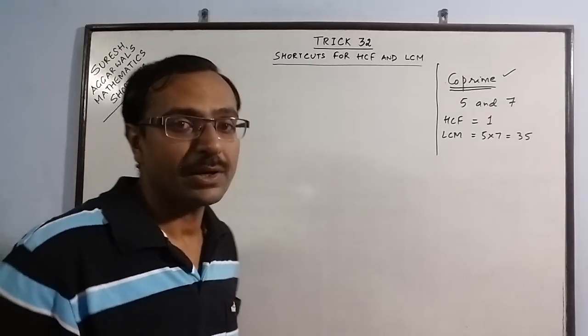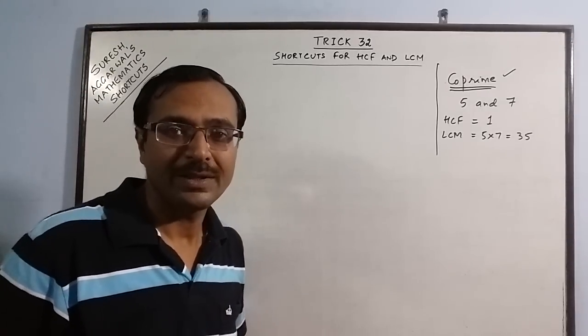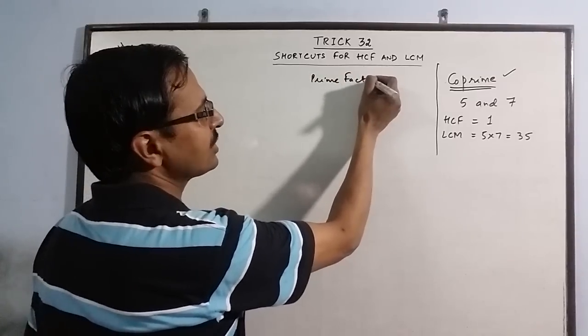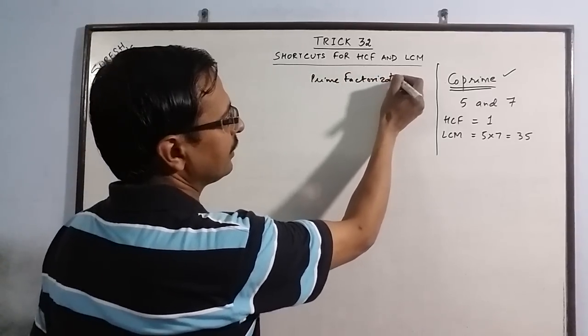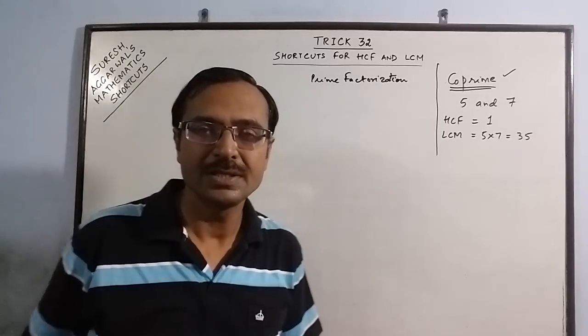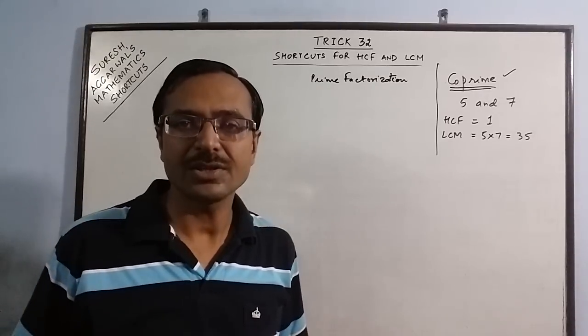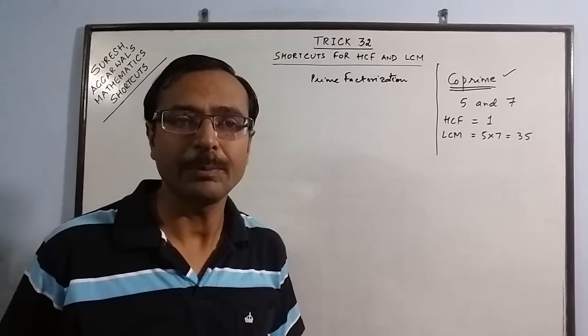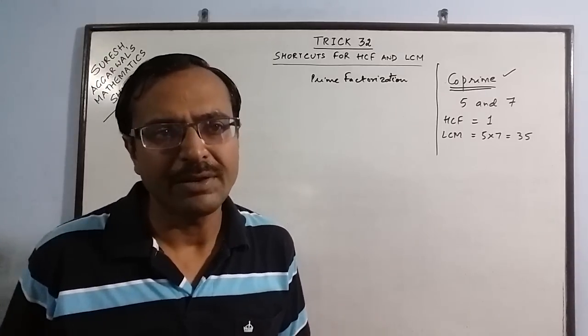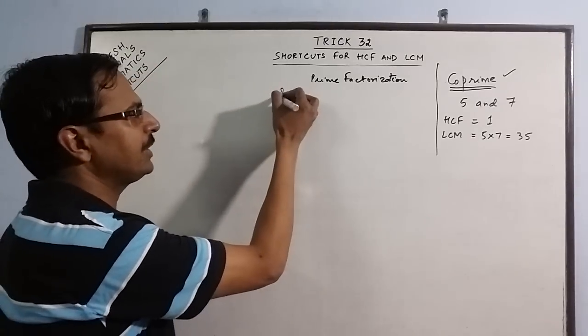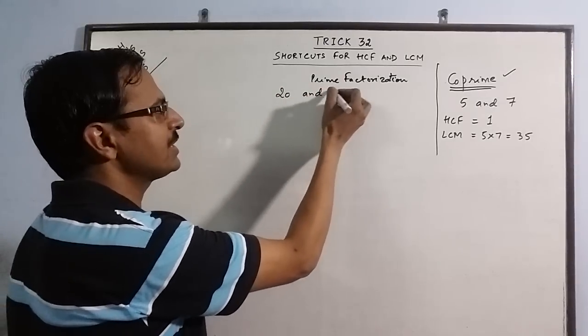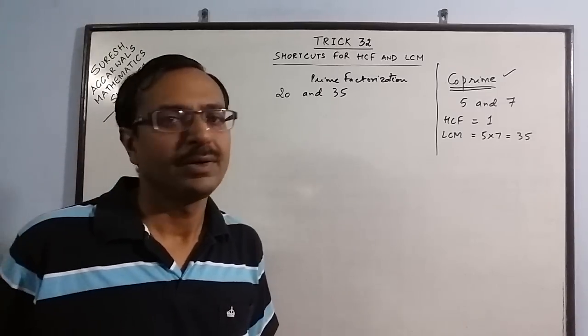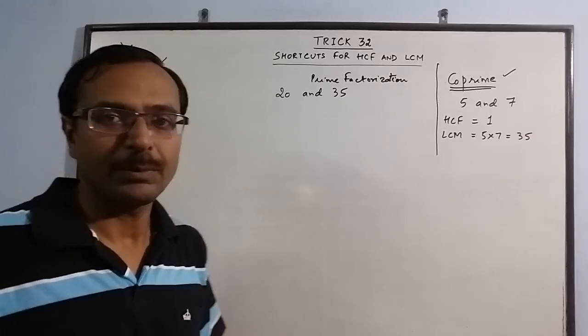Now if the numbers are not co-prime then we use the prime factorization. Now prime factorization method can be applied to any larger numbers, any numbers which are having common factors between them. I will take one example. Say we are having an example of 20 and 35. Taking small examples so that the concept is clear to you and you can apply that concept to solve bigger numbers questions involving bigger numbers.